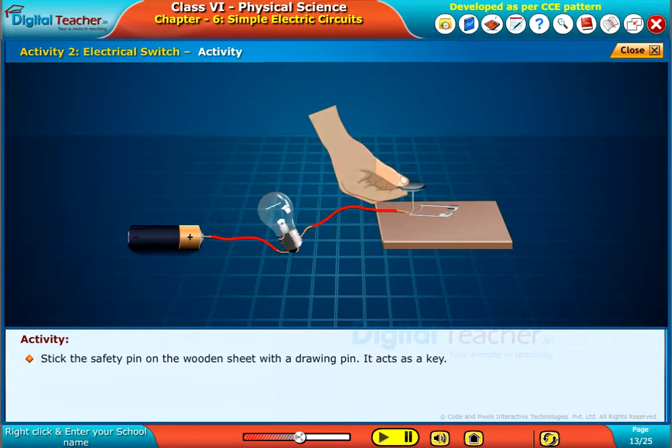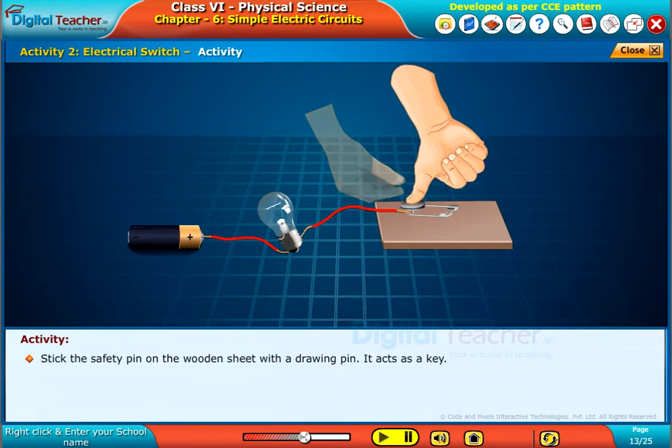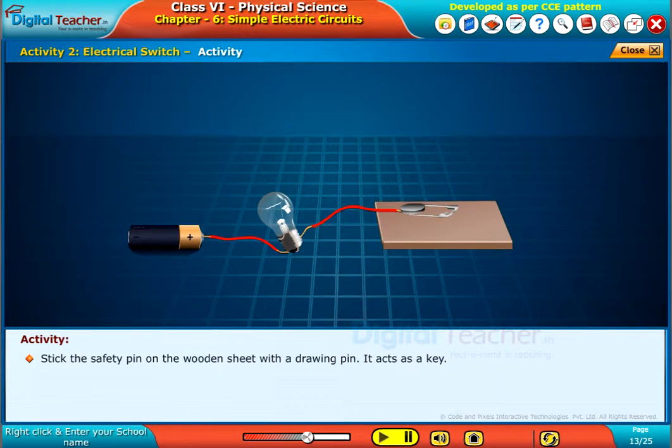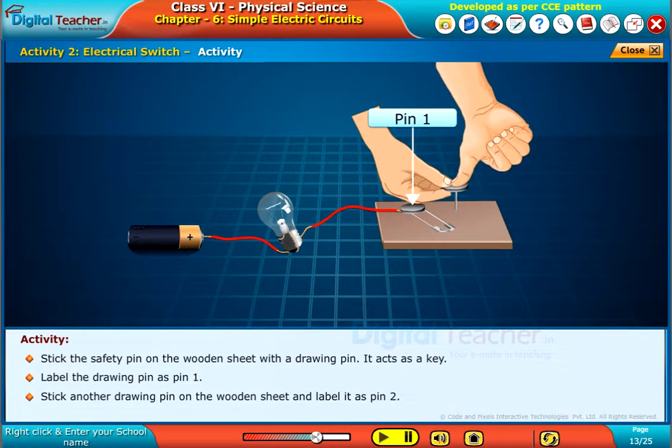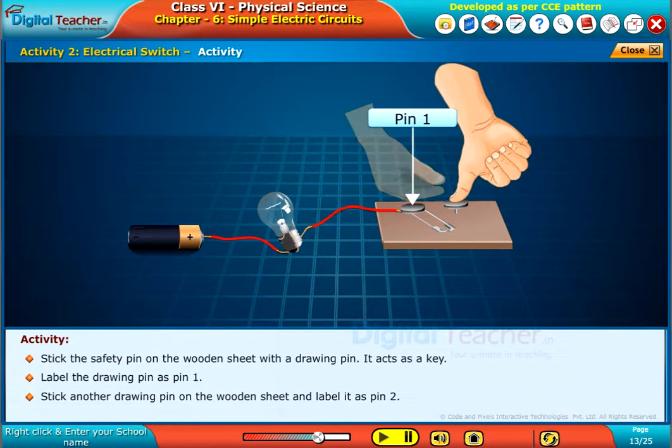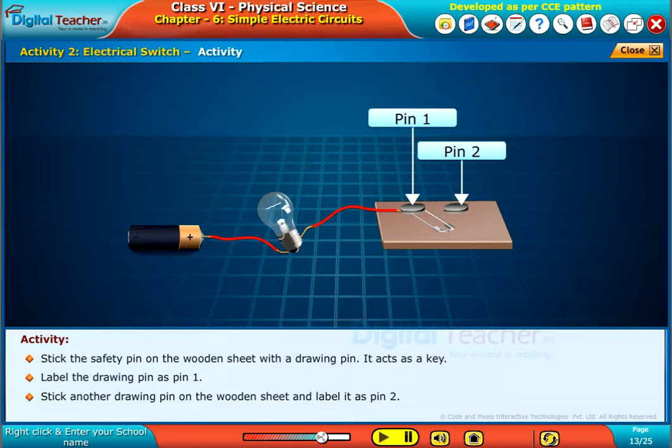Stick the safety pin on the wooden sheet with a drawing pin. It acts as a key. Label the drawing pin as pin 1. Stick another drawing pin on the wooden sheet and label it as pin 2.